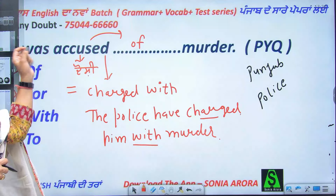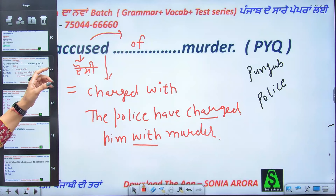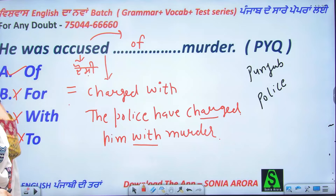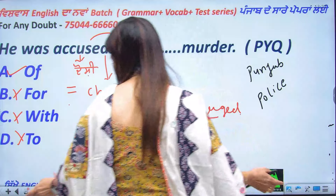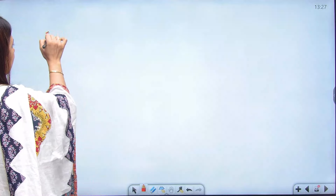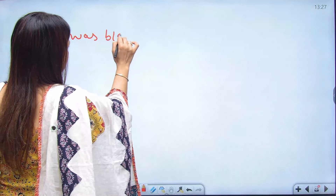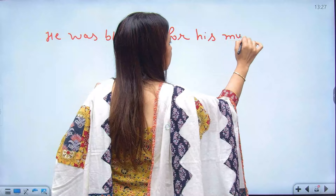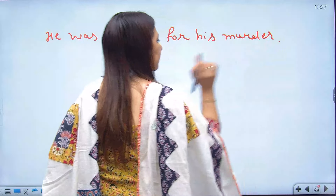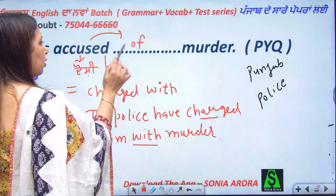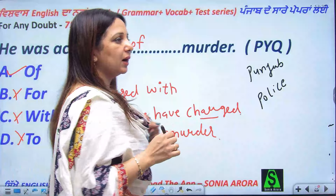So here the preposition with 'accused' is 'of'. From one question, three concepts are clear: 'blame for' — preposition 'for'; 'accused of' — preposition 'of'; 'charged with' — preposition 'with'. All three mean the same thing.